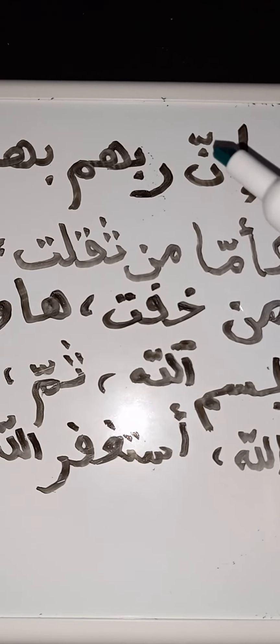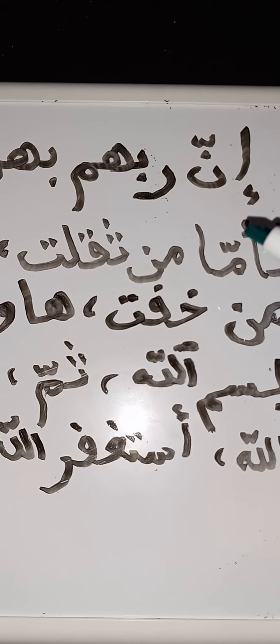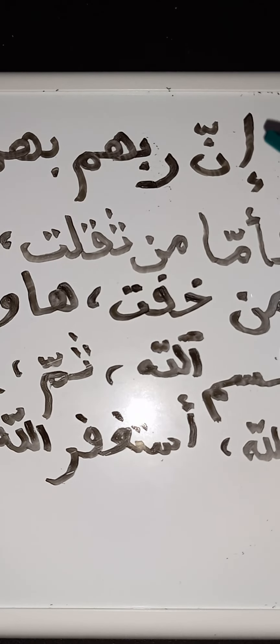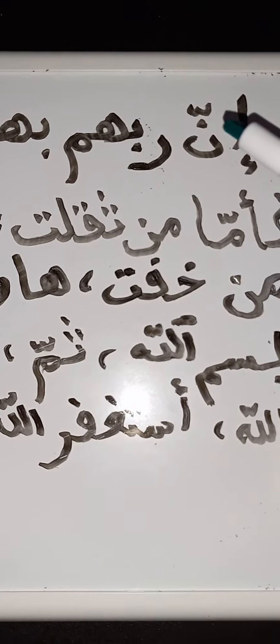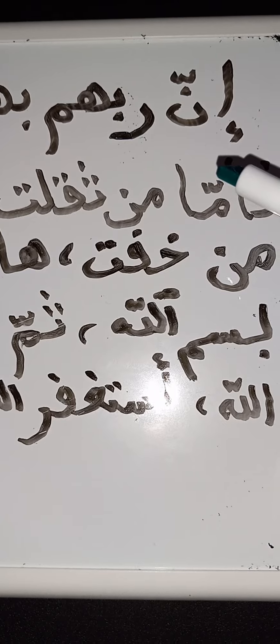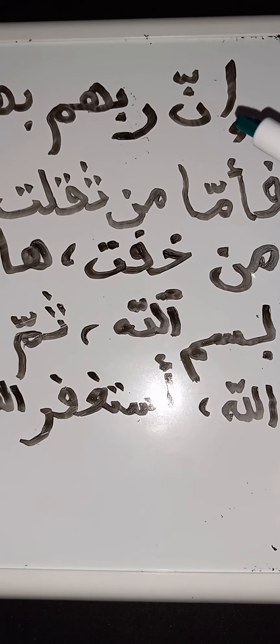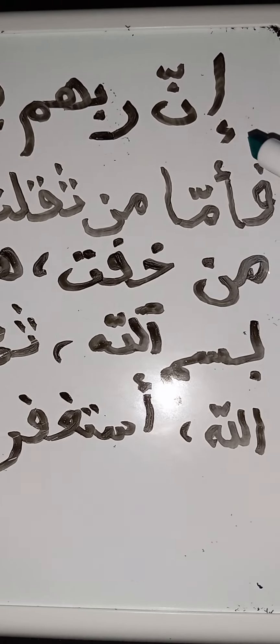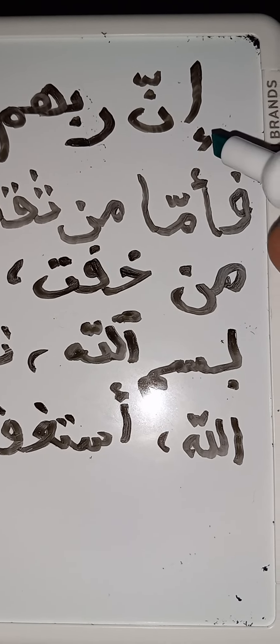We wanted to make clear that if a noon or a meem have a shadda, unlike any other letter, these two letters are much stronger than any other letters with shadda — number one. Number two, they actually come with nasal sounds when you are articulating them. Noon and the meem: 'a ghunna meeman thumma noonan shudida' — ash-Shatabi with sahabi.